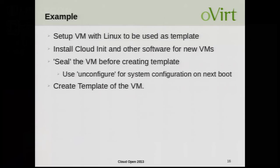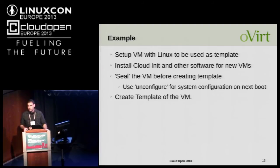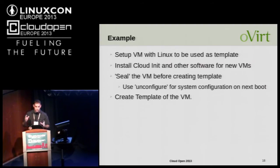Let's look at an example of how to use cloud-init with oVirt. First, what we need is a template in oVirt with a Linux distribution installed and cloud-init installed — in addition to the OS. You can also install other software like the oVirt Guest Agent. An optional step is sealing the VM before creating the template, which runs an unconfigure command that sets the OS to show first-setup on next boot. Then you create a template from this VM.